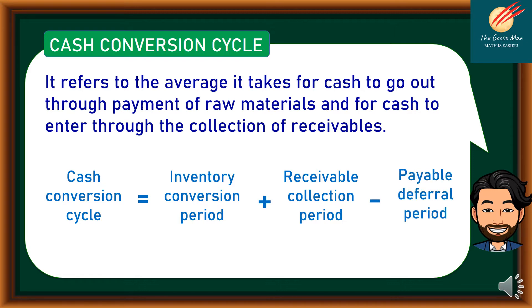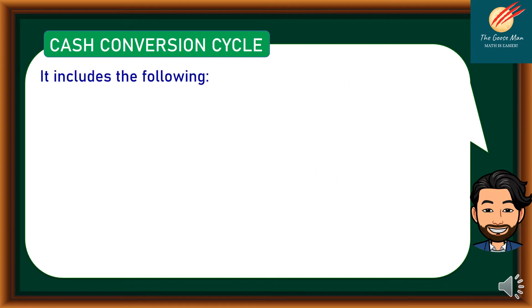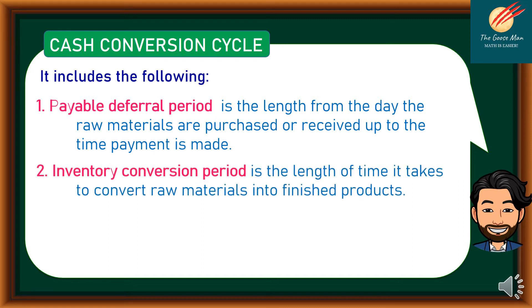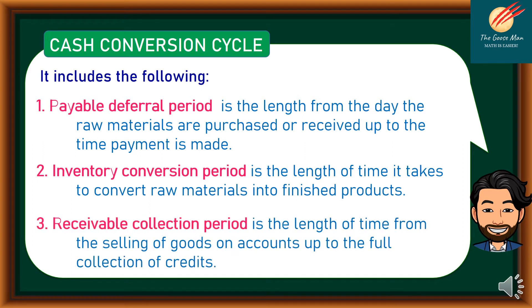For our discussion, we will include the following. First, payable deferral period is the length from the day raw materials are purchased or received up to the time payment is made. Number two, inventory conversion period is the length of time it takes to convert raw materials into finished product. And finally, receivable collection period is the length of time from the selling of goods on account up to the full collection of credit.